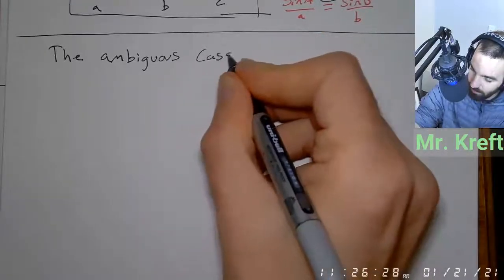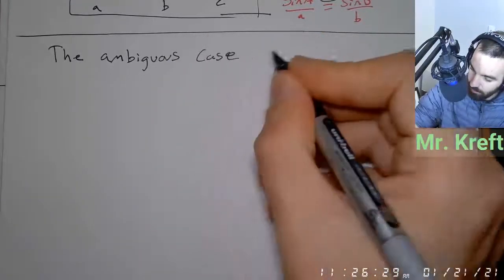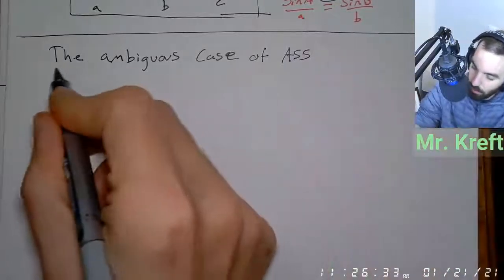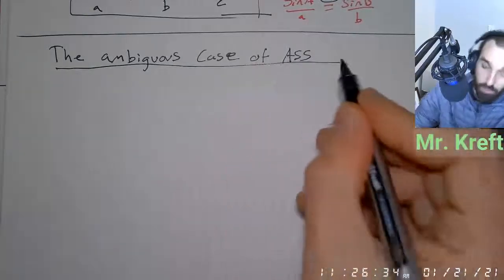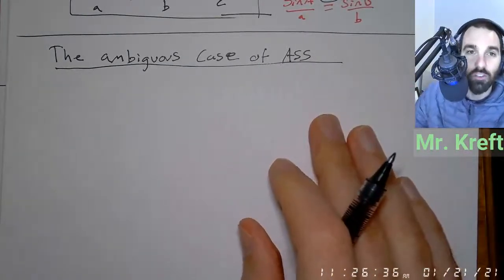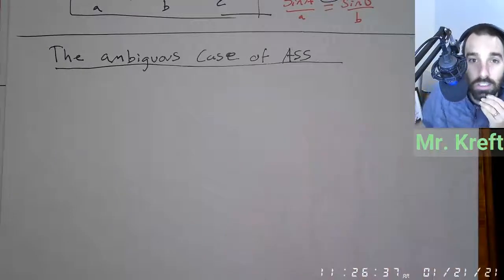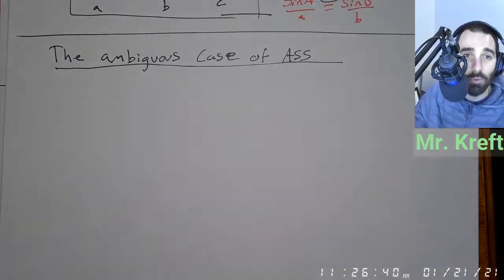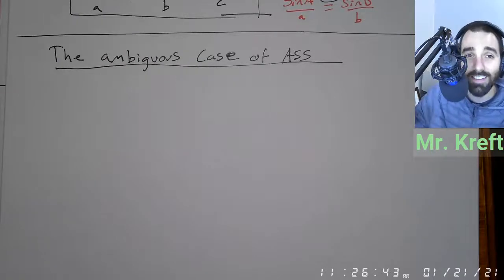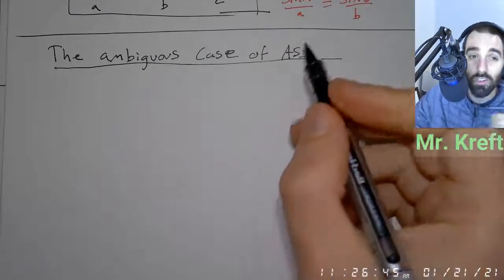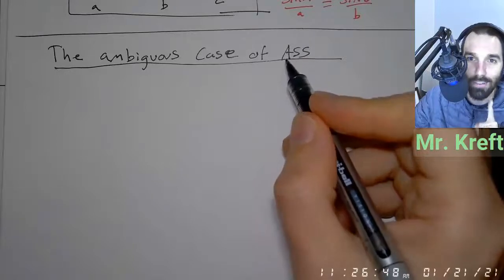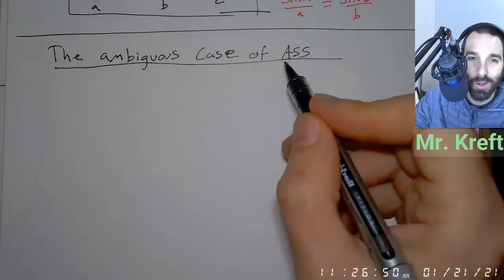The ambiguous case of ASS. I don't know if you guys remember back to geometry, but you did congruent triangles — how can we prove triangles congruent? SSS, SAS, ASA. But then your teacher probably said you don't do ASS because ASS is a bad word.